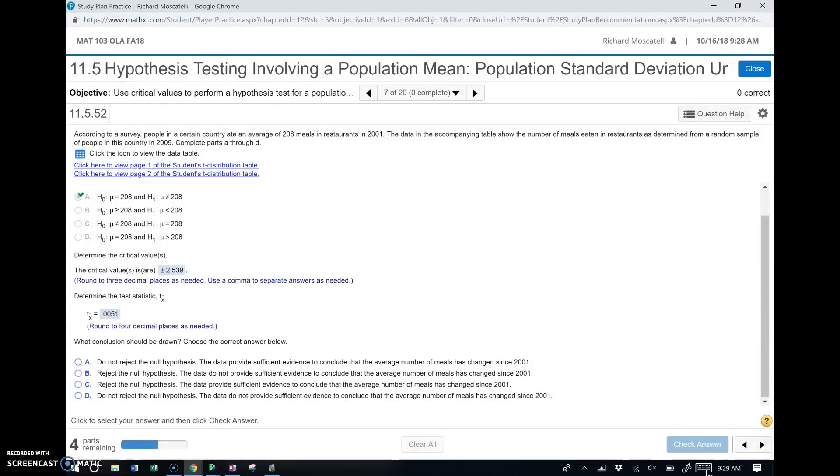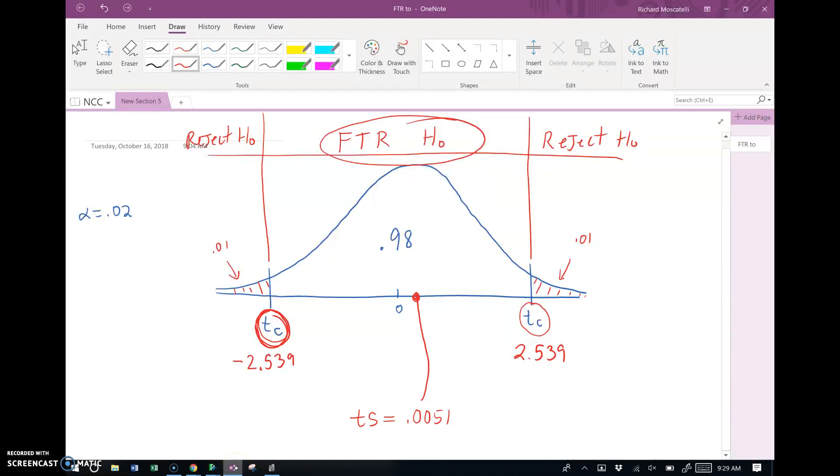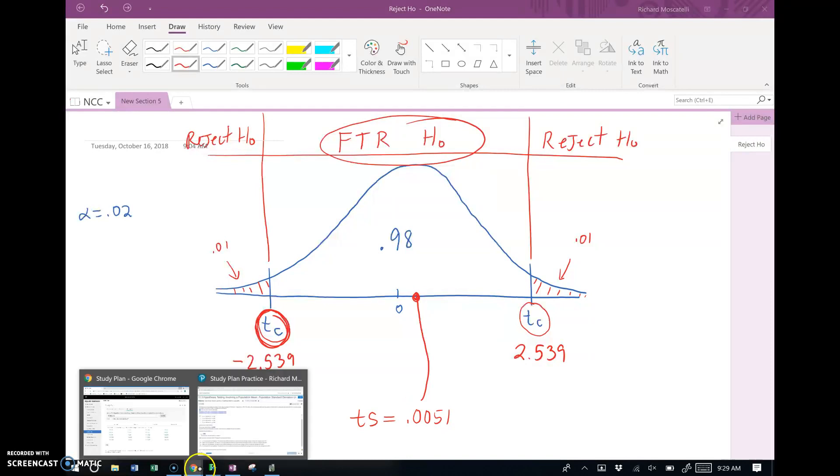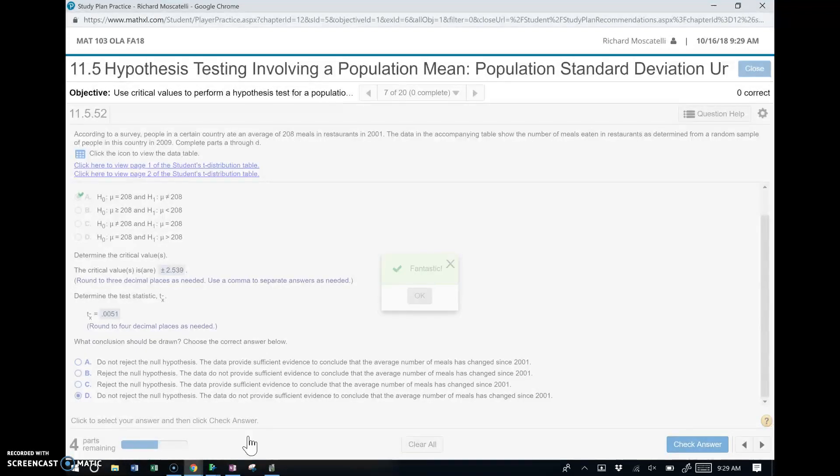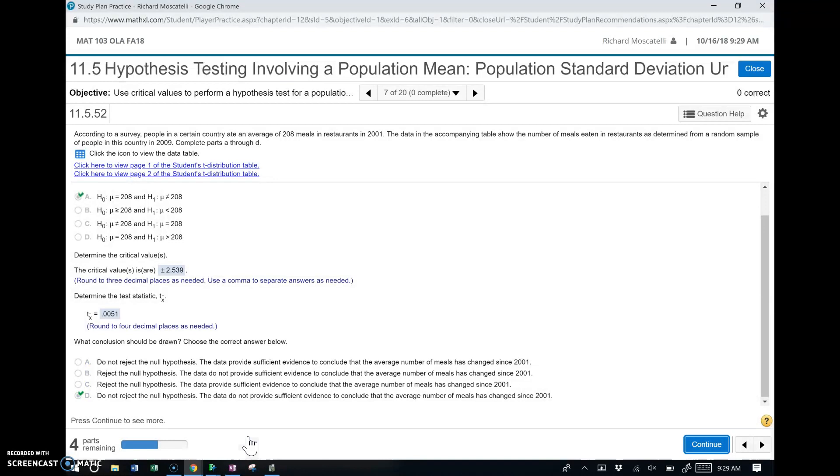Okay. Alright. So what conclusion can be drawn? Well, we already know the conclusion. We just spoke about it. So the testing statistic lands in the non-critical region. The decision rule says, fail to reject the null hypothesis. So let's go ahead and pick that choice out of there. So I see two of them say do not reject. Do not reject is letter A, and the letter D also says do not reject. So we've got to look and see what it says. The data provides sufficient evidence to conclude that the average number of meals has changed. No. We know it's not that. Do not reject null hypothesis. The data do not provide sufficient evidence to conclude that the number of meals has changed. Alright. So that looks like it's the answer right there. Fantastic. Press continue to see more.